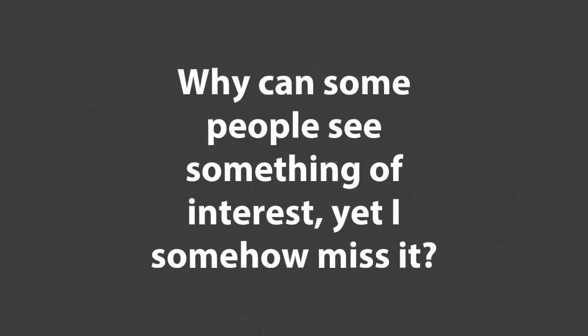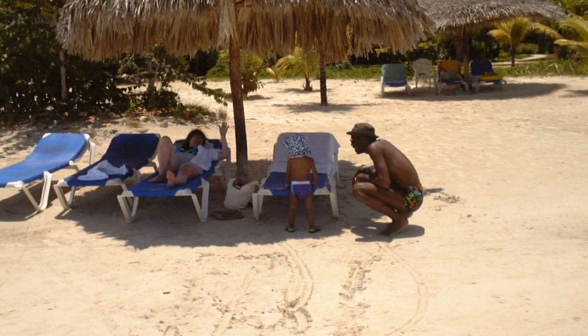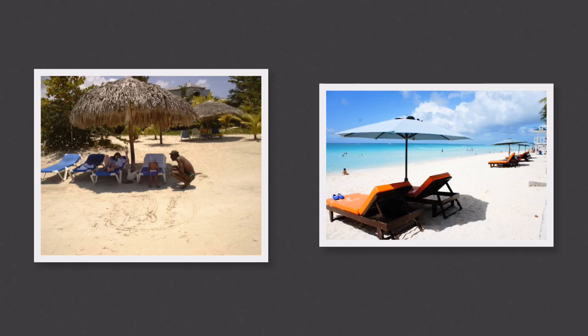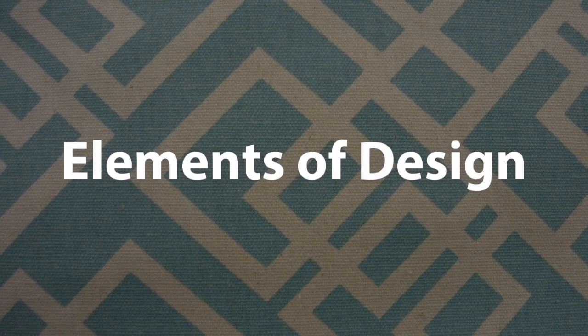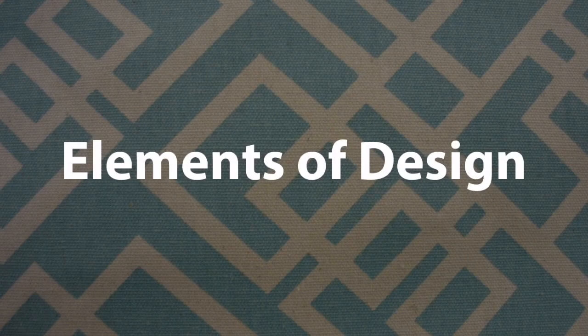Maybe the most basic question is: why can some people see something of interest, yet I can somehow miss it? Maybe this has happened to you before. You're at the beach and you've brought along your camera. You notice a scene that might be interesting, so you take a picture. Meanwhile, your friend has also come along and taken a picture. Later on, you compare the pictures and think: why is their picture so much more appealing to me? Most likely, your friend has a good grasp of elements of design — the parts of design that we humans tend to like to see.